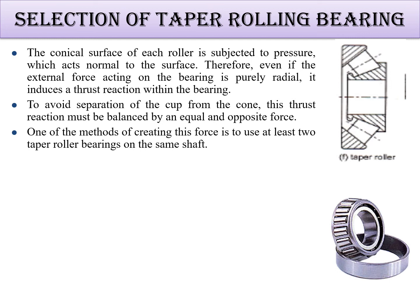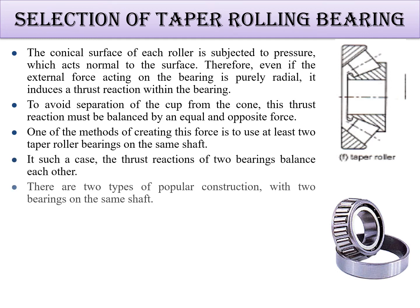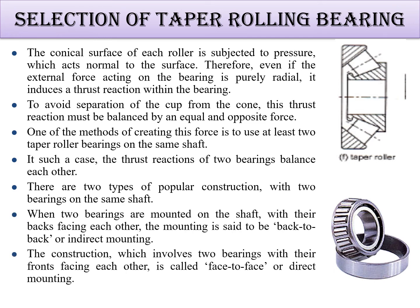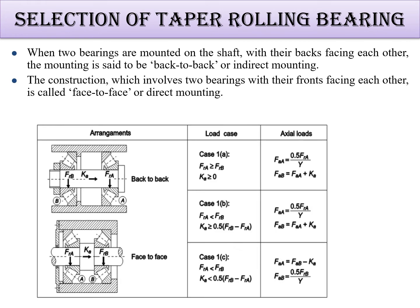The thrust reactions of two bearings balance each other based on two construction arrangements. When two bearings are mounted on the shaft with their backs facing each other, the mounting is called back-to-back. The other arrangement is face-to-face, where the cone faces point toward each other.